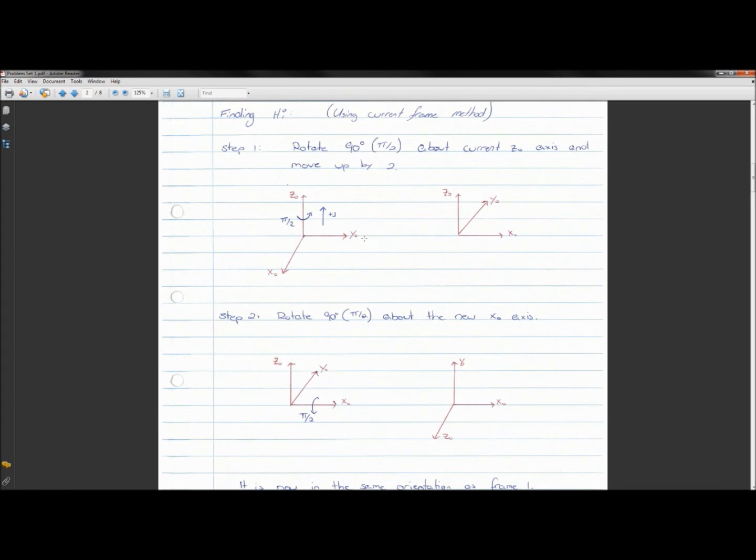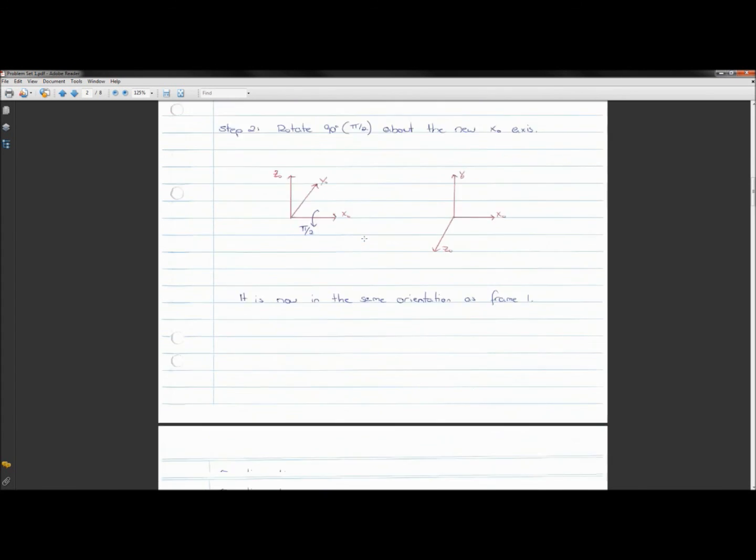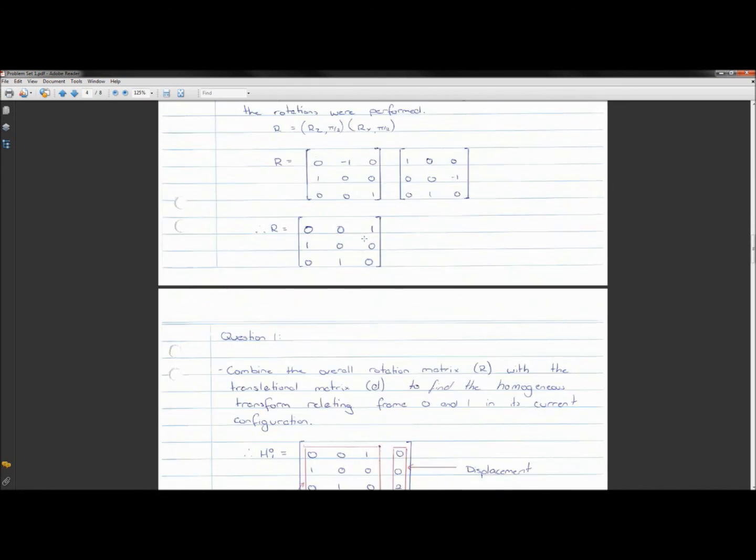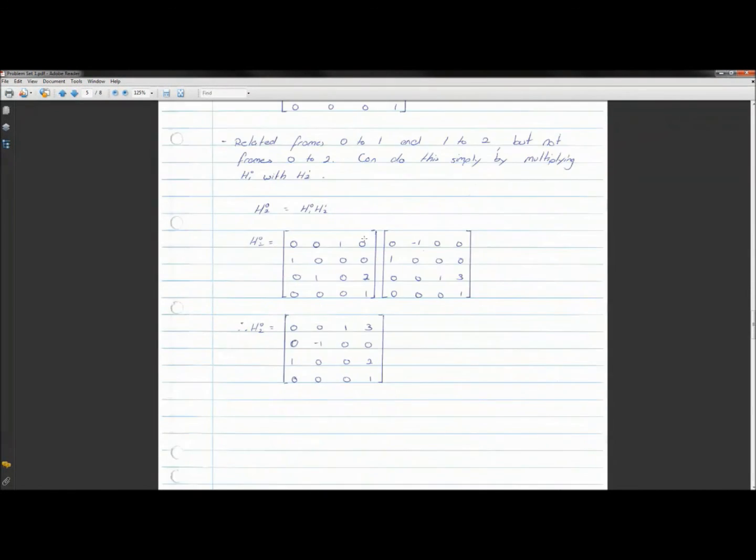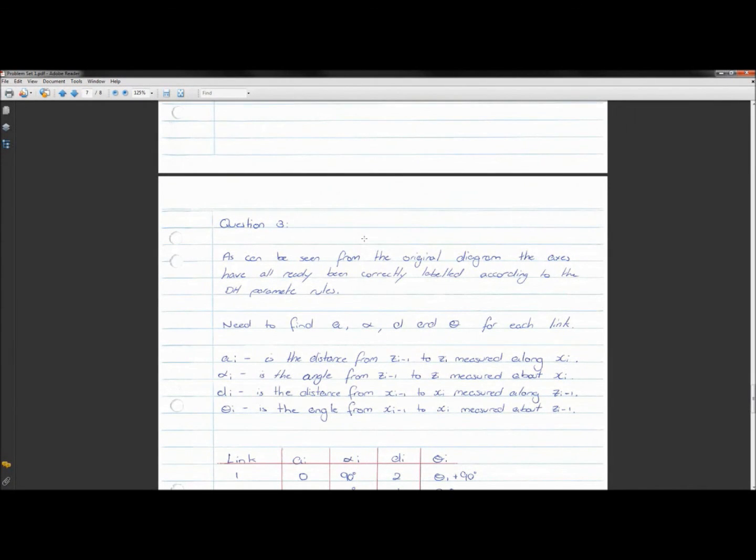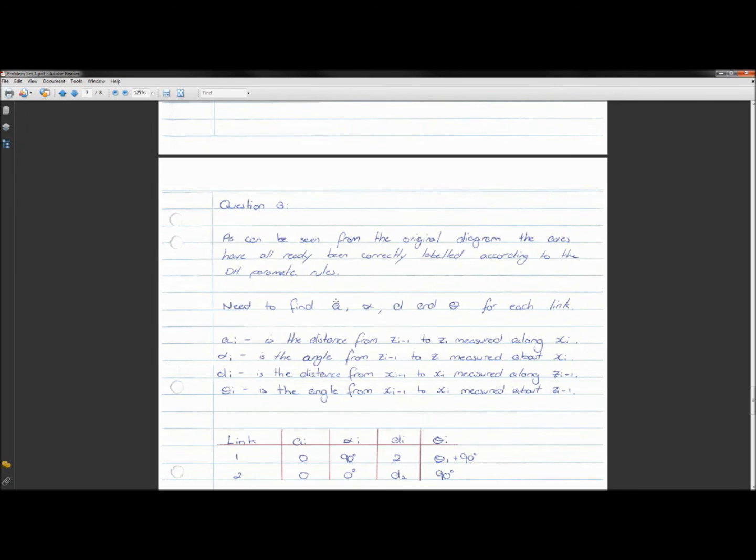But if you want to go look at the rules, simply open up a robotics textbook, or Google, and look for DH parameters, and link, joint, and link labeling, and you should kind of find what you're looking for, and how, what the rules actually are. They're not hard to understand. But then, what we then have to do, once you set up, and I've set this robot up correctly so that the axes follow the correct conventions and follow the rules, you then need to find the A, the A i, alpha i, d i, and theta i for each of the links. Now, these correspond to different...